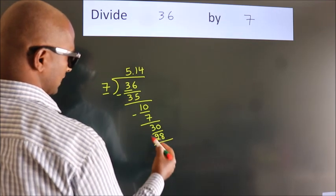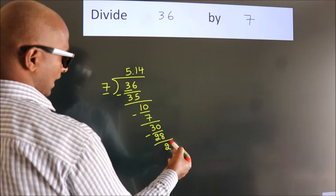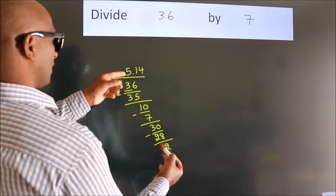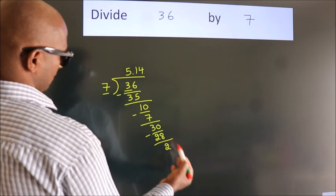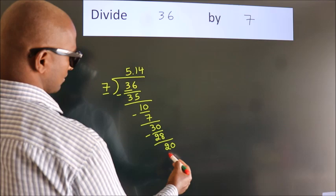Now, we subtract. We get 2. After this, we already have the decimal. So, directly take 0. So, 20.